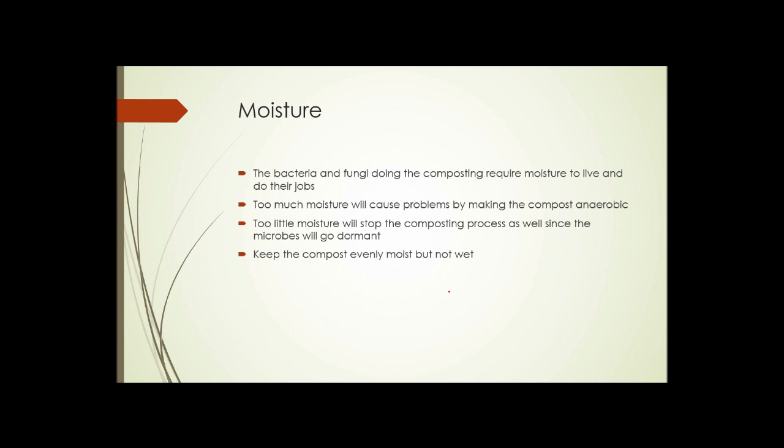Moisture. Bacteria and fungi that do the composting require moisture to live and do their jobs. Too much moisture will cause problems by making the compost anaerobic, keeping the oxygen out. Too little moisture stops composting because the microbes go dormant when there isn't enough moisture around. So the compost needs to be kept evenly moist but not wet.